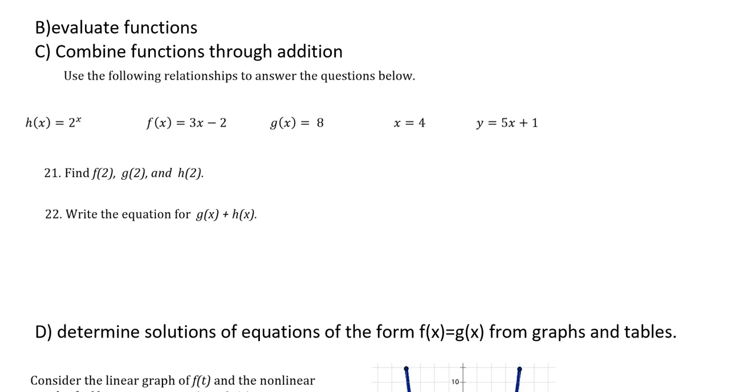The next set of objectives related to the purpose is to evaluate functions and combine functions through addition. The instructions in 21 and 22 say use the following relationships to answer the questions below. We're only going to do 21 and 22. First off, we're fulfilling objective B: evaluating functions. To find f of 2, I plug in 2 for x, or substitute I should say. 3 times 2 minus 2, well that's 6 minus 2, which is 4. So f of 2 is 4.